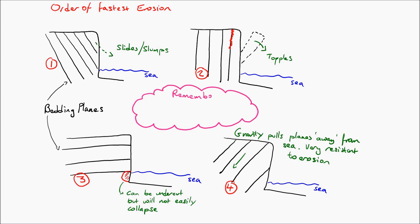Now you need to remember that this structure, these bedding planes, is only part of the story and the type of rock also makes a huge impact on rates of erosion.